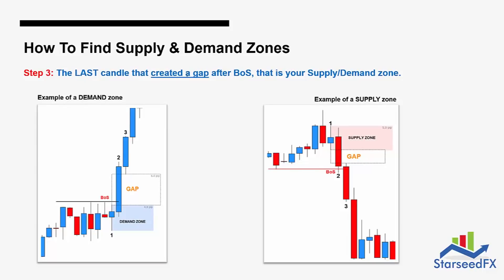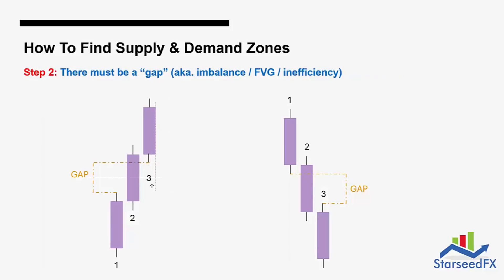Step three: the last candle that created a gap after the break of structure — that is your supply and demand zone. Here is an example of a demand zone: there is the break of structure on candle number two, and you slash it — imagine it is gone. You will see that between number one and number three there is a gap, so number one becomes your demand zone. The difference with the order block is that whenever there is a break above, the order block is the last bearish candle before the breakout happened. I always include the wick in my order block, so the zone is almost the same — it's just the method of identifying it.